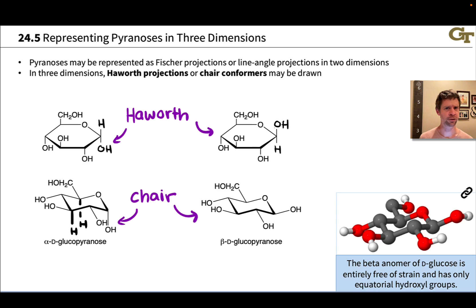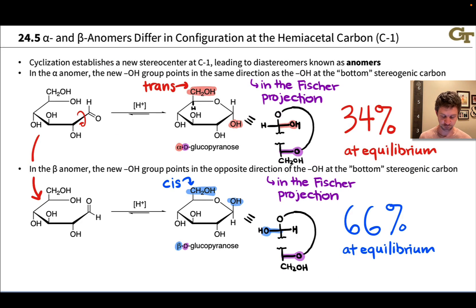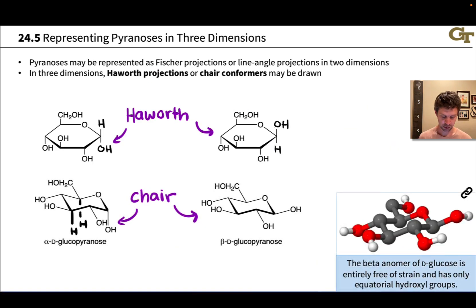These chair structures help us see why beta-D-glucopyranose is the major anomer of glucose in solution. Notice that in this structure, all of the groups are equatorial, but the alpha anomer has an axial hydroxyl group at carbon-1.